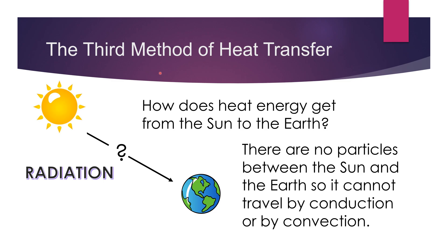The third method of heat transfer is radiation. How does the heat energy get from the sun to the earth? There is no medium present between the earth and the sun, so how will the heat transfer? There are no particles between the sun and the earth, so it cannot travel by conduction or by convection, because there is no medium or particles present in between the sun and earth. We call this method radiation.